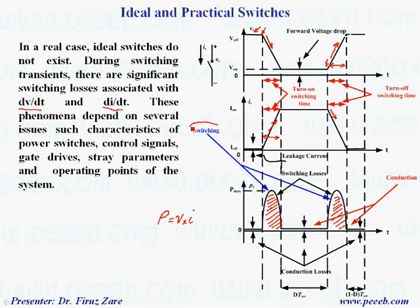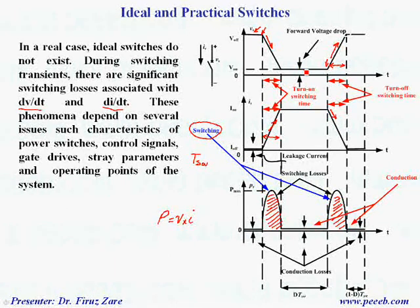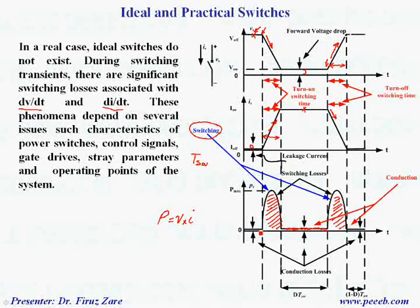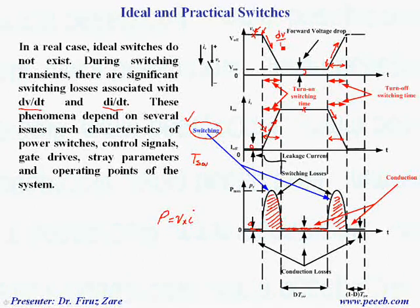So these are switching losses. Over one switching cycle, defined as TSW, we have one turn-on and one turn-off loss. When the switch is on, because the voltage drop across the switch is not zero, voltage times current defines the conduction losses. Assuming leakage current is zero, conduction loss when the switch is off is zero. By changing the switching time during turn-on or turn-off, we may decrease switching losses, but this increases dv/dt and di/dt.